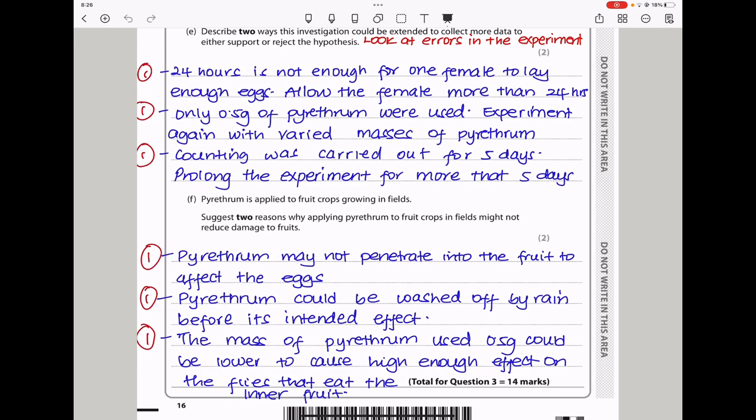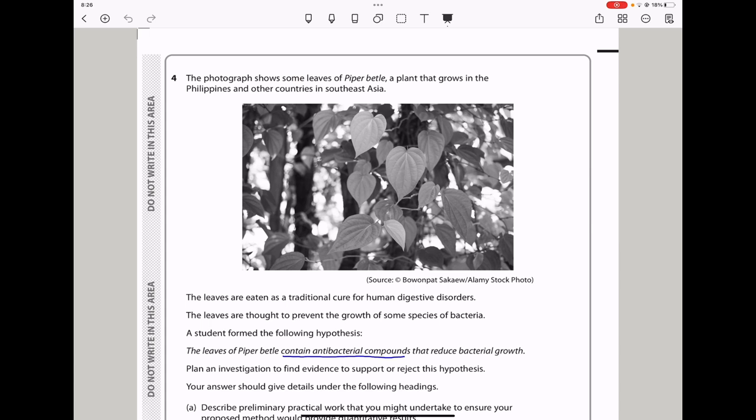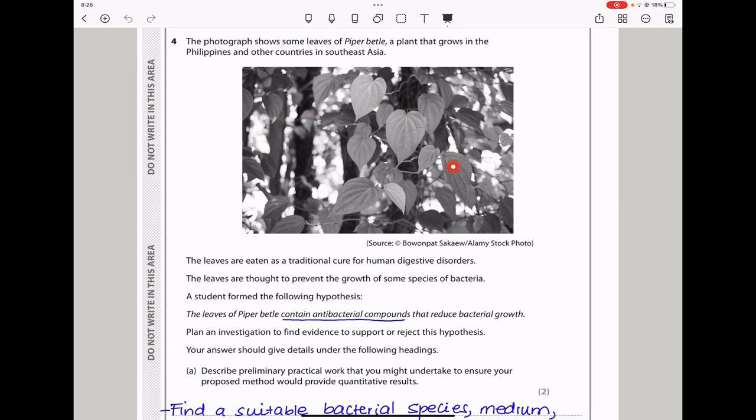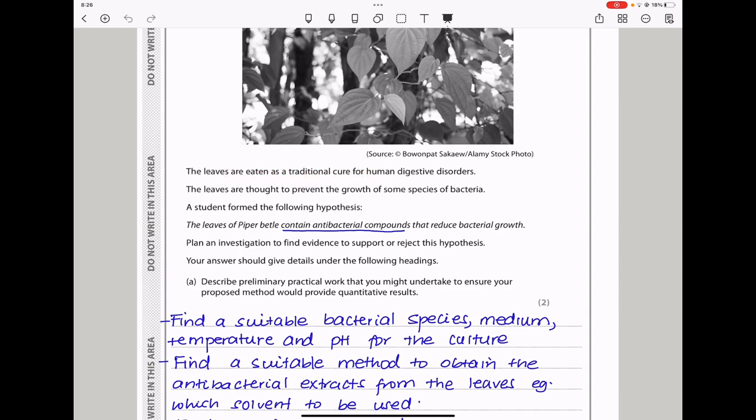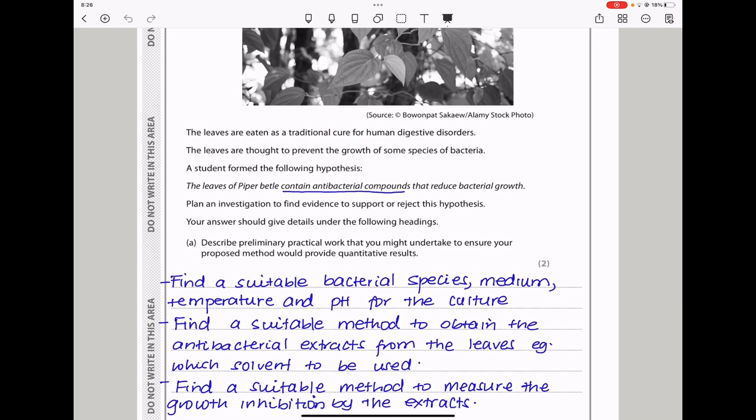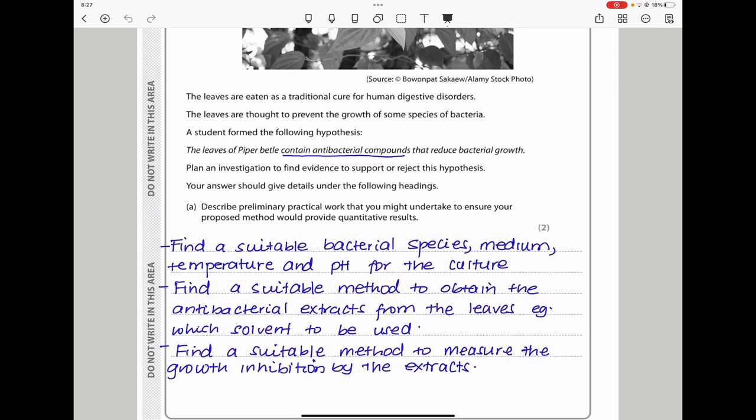Let's continue to question four. The photograph shows some leaves of piper beetle, a plant that grows in the Philippines and other countries in Southeast Asia. This is the plant. The leaves are eaten as traditional cure for human digestive disorders, and the leaves are thought to prevent the growth of some species of bacteria. A student formed the following hypothesis: the leaves of piper beetle contain antimicrobial compounds that reduce the bacterial growth. They want you to plan an investigation to find the evidence to support or reject this hypothesis.